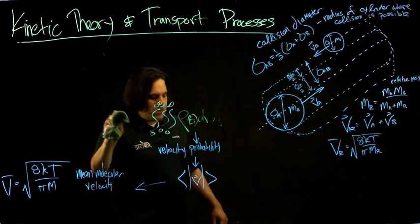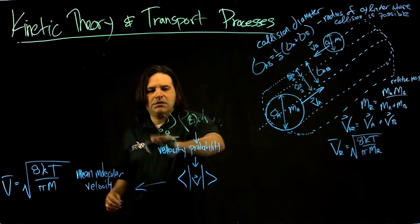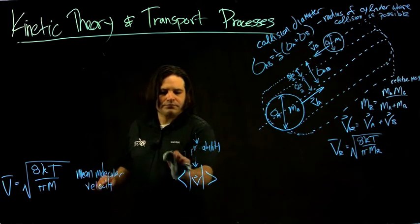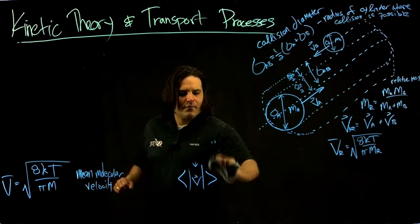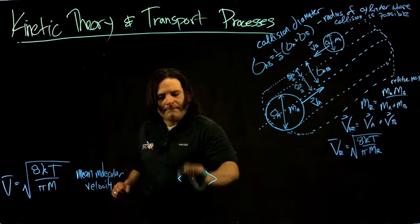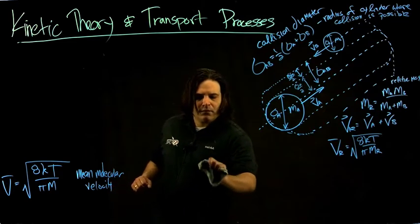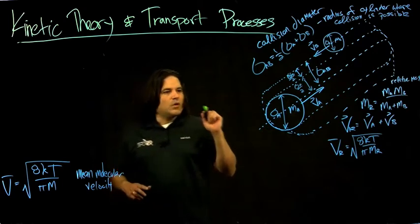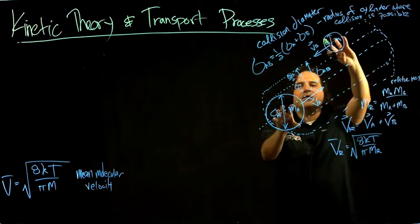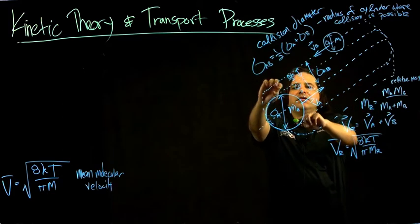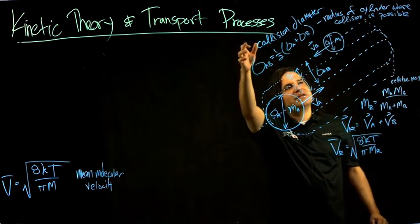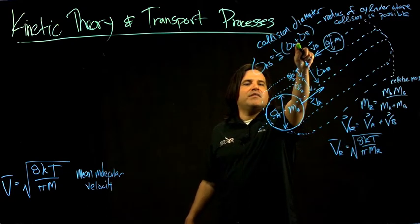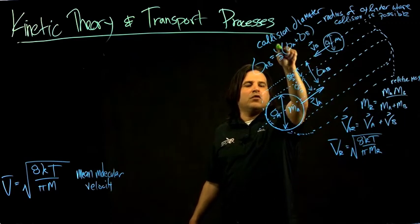We defined our collision volume where a collision will happen. That depends on the cross-sectional area of the cylinder, which is defined by the radius of the cylinder. That radius is called the collision diameter. The diameter comes from the fact that we're adding up an effective diameter of the two bodies, but it forms the radius of this cylinder.